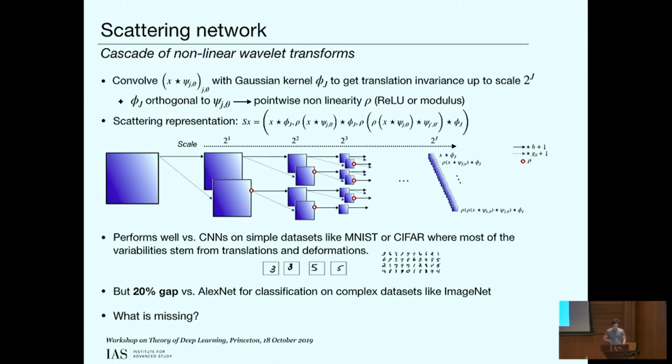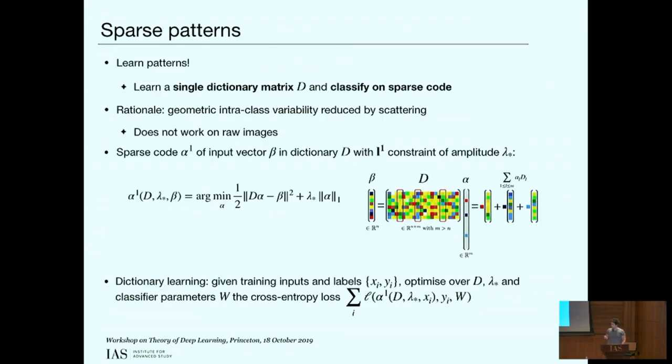It performs well compared to CNNs on simple datasets like MNIST or CIFAR, where most of the variabilities stem from translation and deformation. On MNIST, where intra-class variability is almost purely reduced to translation, small deformation and rotation, scattering transform is even state-of-the-art. But on a complex dataset like ImageNet, where there is much more intra-class variability and not purely geometric, there is a 20% gap with AlexNet in terms of performance.